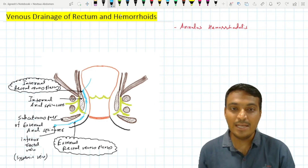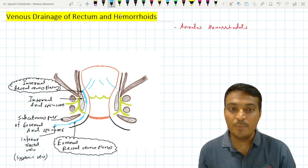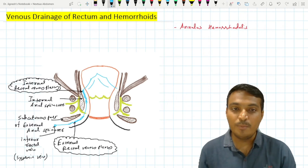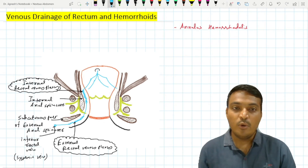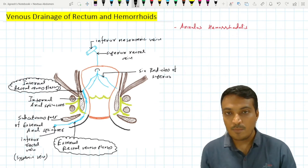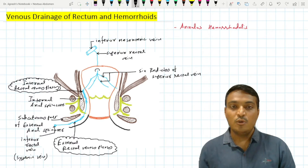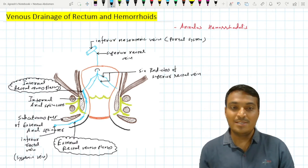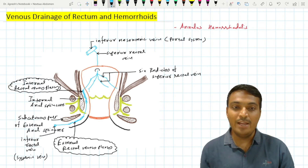The internal rectal venous plexus drains into six radicals, which fuse to form one superior rectal vein. This superior rectal vein pierces the posterior wall of the rectum and drains into the inferior mesenteric vein, making the superior rectal vein a portal vein tributary.